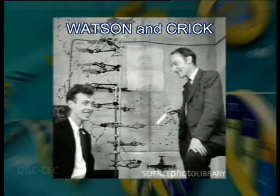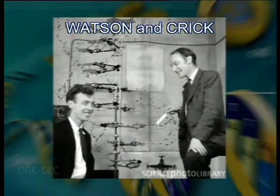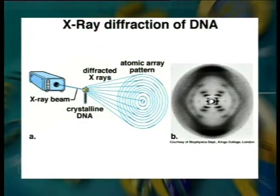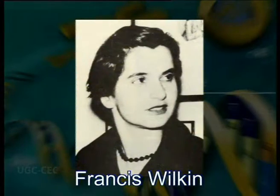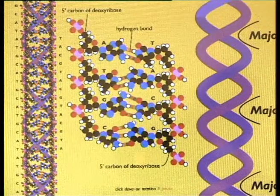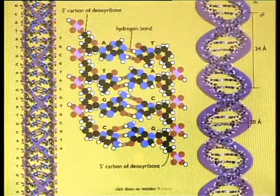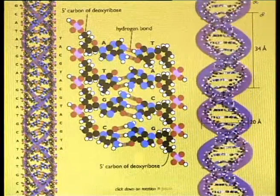The breakthrough in the history of science came with the discovery of the physical structure of the DNA molecule by James Watson and Francis Crick. In 1953, they proposed the double helix model of DNA, which soon became universally accepted. Three notions converged in the construction of this model. First, X-ray diffraction data carried out by Rosalind Franklin showed that DNA has the form of a regular helix, making a complete turn every 3.4 nanometers with a diameter of approximately 2 nanometers. The distance between adjacent nucleotides is 0.34 nanometers, so there must be 10 nucleotides per turn.